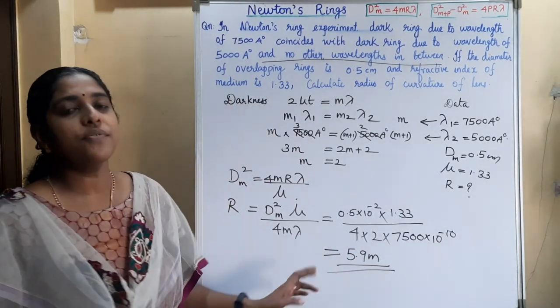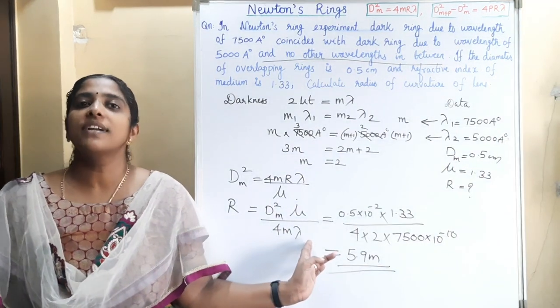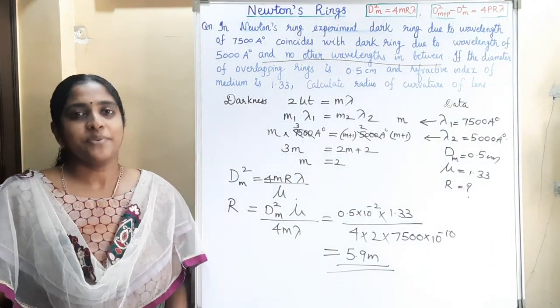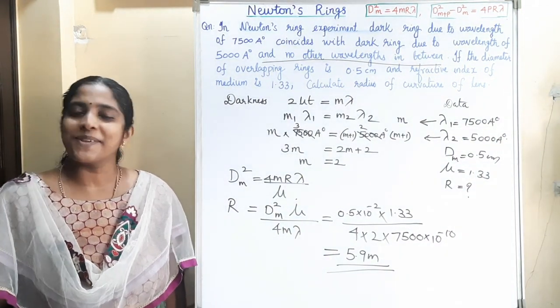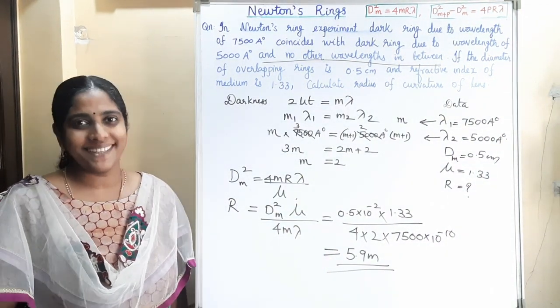Calculating gives R = 5.9 m. So the radius of curvature of the given lens is 5.9 m. Try more questions — all the best, bye bye.